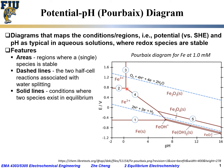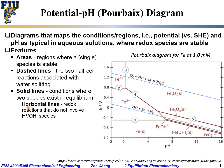The solid lines act as boundaries between different regions and represent the conditions where two species can coexist in equilibrium. For example, on this vertical line, Fe³⁺ and ferrous oxide coexist. On this horizontal line, Fe³⁺ and Fe²⁺ coexist. And along this horizontal line, Fe²⁺ and iron metal coexist.